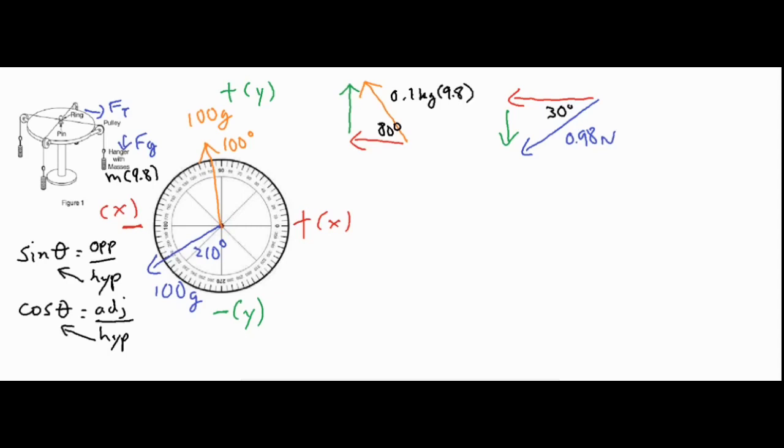Let's take a look at our x components first. For x components, when we get this portion over here, we're going to take this hypotenuse or the force, which is 0.98 newtons, times the cosine of 80 degrees, and that's going to give us 0.17 newtons.